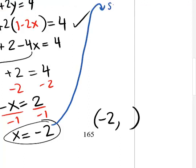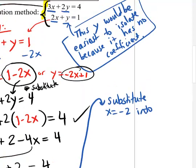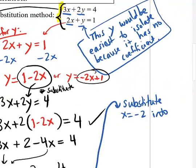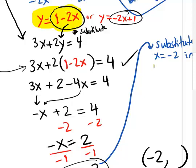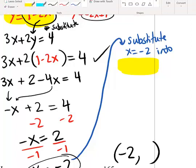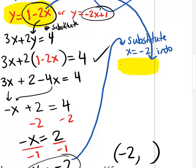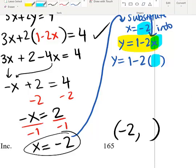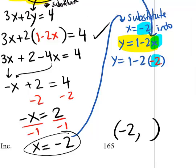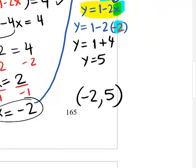Substitute x equals negative 2 into the equation that has y isolated. That gives y equals 1 minus 2 times negative 2, which becomes 1 plus 4, so y equals 5. Now we know both values: x equals negative 2 and y equals 5. So we think the solution is negative 2 comma 5, though you can always check by substituting back into both original equations.